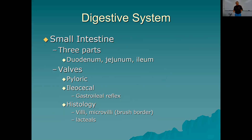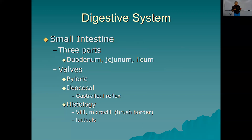The differences between these segments are microscopic — you'd have to be a gastroenterologist to tell them apart on a slide. In lab, you can identify the first part of the duodenum because it attaches to the stomach, and the last part of the ileum where it connects to the large intestine, but the exact boundaries between duodenum/jejunum and jejunum/ileum are indeterminate.